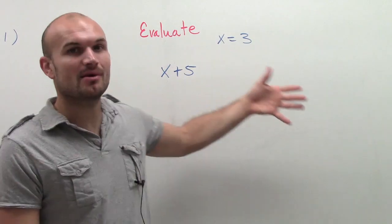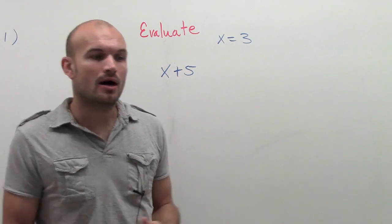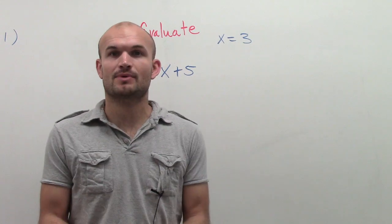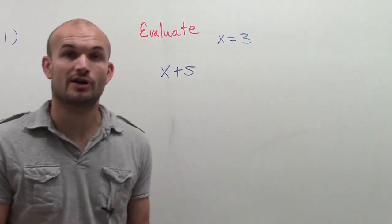So remember, when we're talking about variables, those are unknowns. We don't know the value of the variable. That's why we assign it the variable, the unknown quantity.